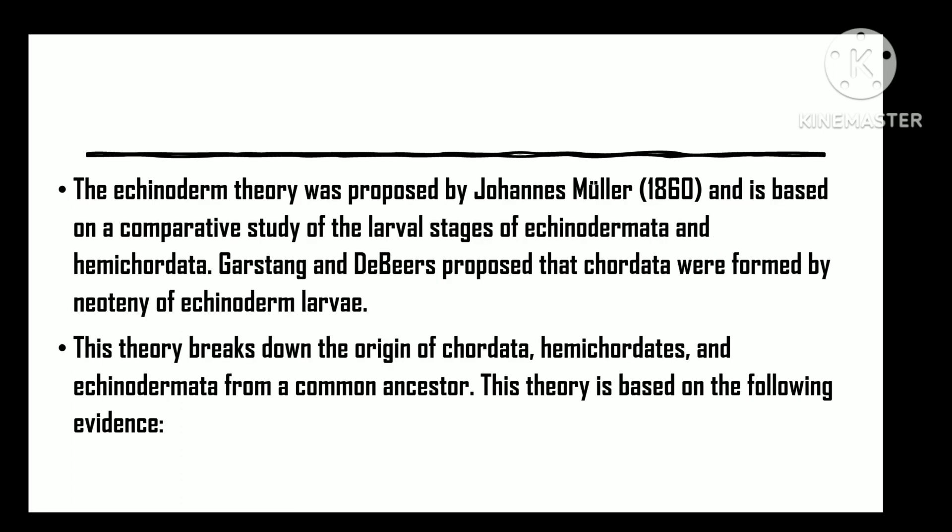The Echinoderm theory was given by Johannes Muller in 1860 and is based on comparative studies of larval stages of echinoderms and hemichordates. Garstang and De Beers proposed that the echinoderm larva gave rise to chordates by neoteny. This theory infers the origin of chordates, hemichordates, and echinoderms from a common ancestor, and is based on the following evidence.